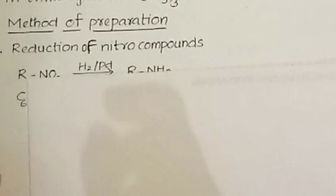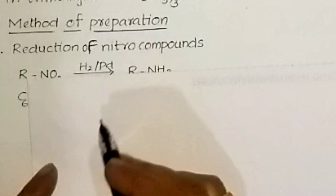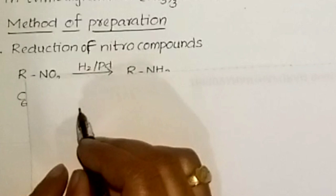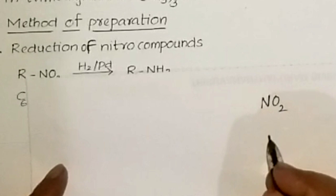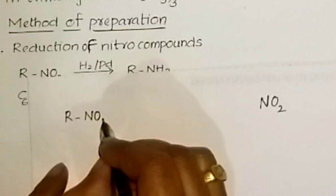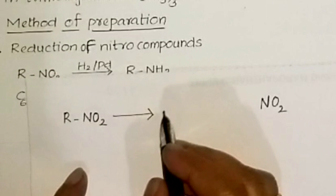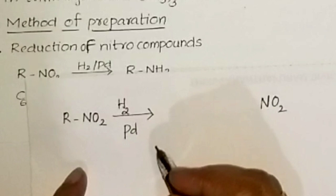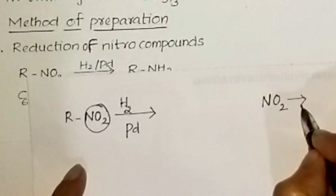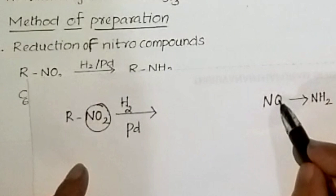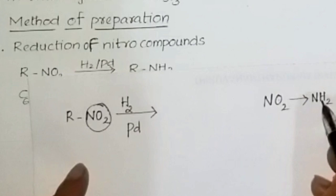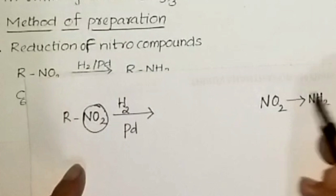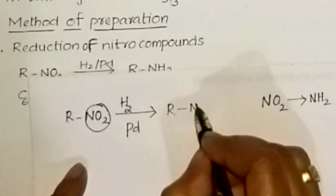The first method of preparation is reduction of nitro compounds. Nitro compounds contain the NO2 group. The general compound RNO2, on reduction — meaning addition of hydrogen — in the presence of platinum or palladium as catalyst, converts the NO2 group to NH2 group. Oxygen is removed and hydrogen is added, giving amines.